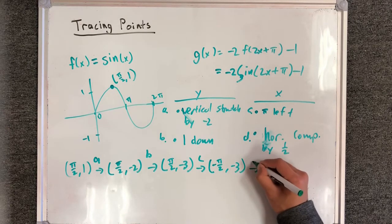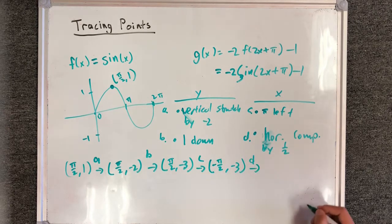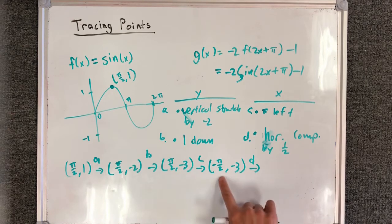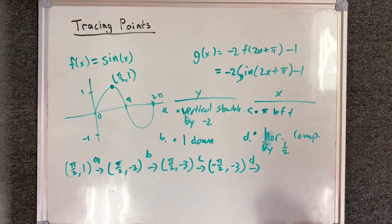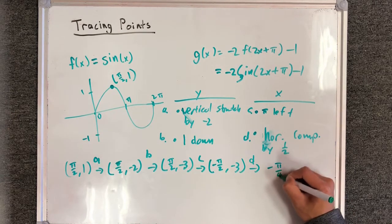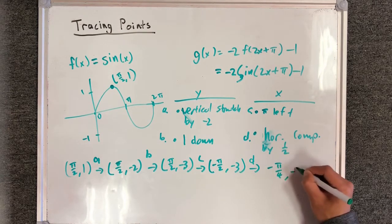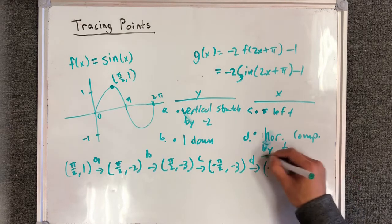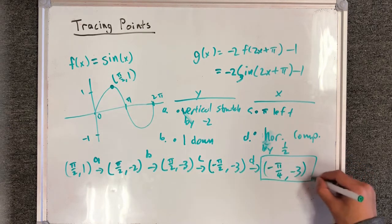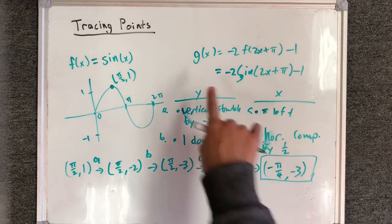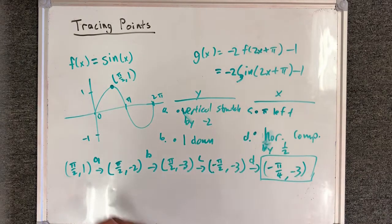And finally, transformation D — horizontal compression by 1 half — take the x-coordinate and multiply by 1 half, giving negative pi over 4 comma negative 3. And here's my final answer. So as always, we get into a good habit of double checking our answer. Let's plug this back into g of x.